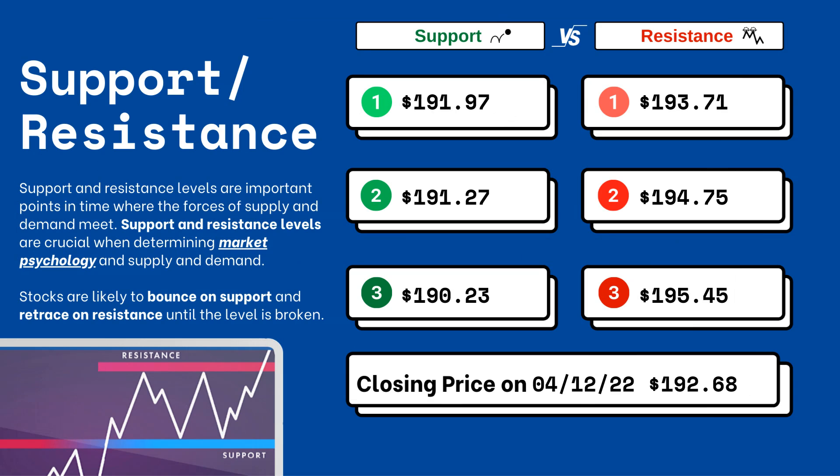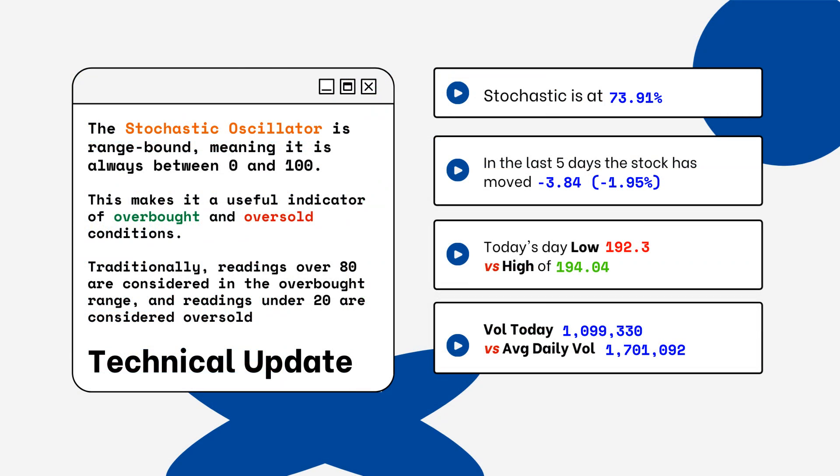Support and resistance levels are very important because they let you know where supply and demand are meeting. On the right side you'll see three support levels and also three resistance levels. These are areas that you want to watch when looking at this particular stock. Stocks typically bounce at support levels and resist at resistance levels, meaning they'll retrace from that top level.